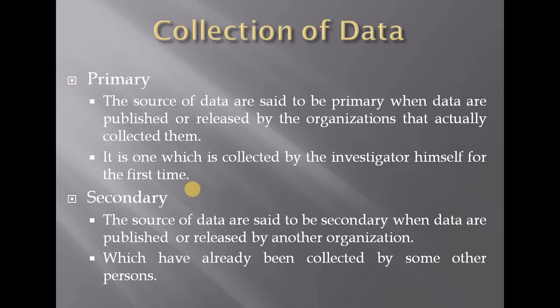The source of data is said to be secondary when data are published or released by another organization, or which have already been collected by some other persons. Secondary data are data already collected by someone else. That is secondary data, whereas data collected by the investigator directly is primary data.